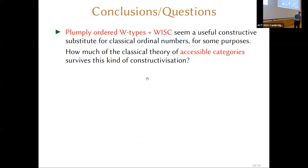To wrap up: it seems that in this constructive setting, taking W-types — initial algebras for polynomial endo-functors — equipped with the plump well-founded ordering, as long as you're in a setting where you have WISC, is a pretty good place in which to do a lot of things that classically you do with transfinite techniques and ordinals. It would be interesting to know how much of the classical theory of accessible categories could be constructivized in this way.